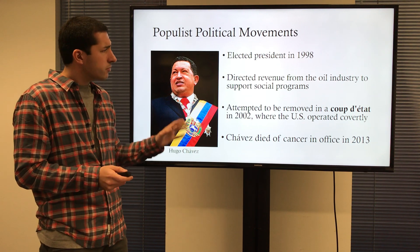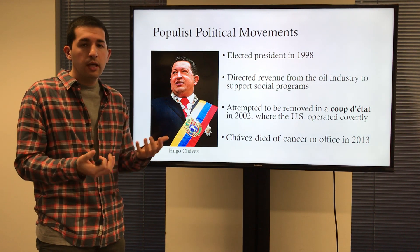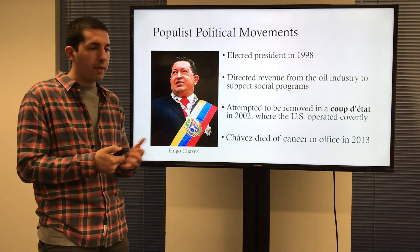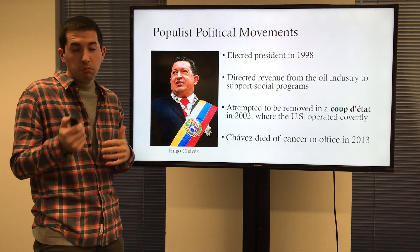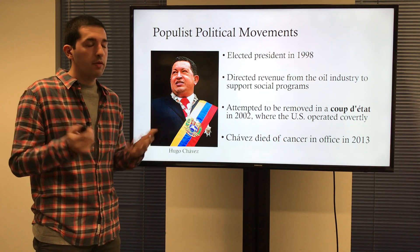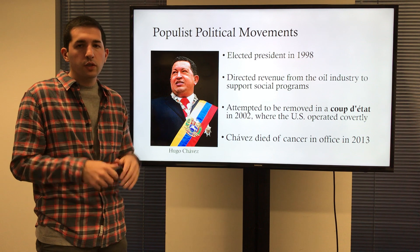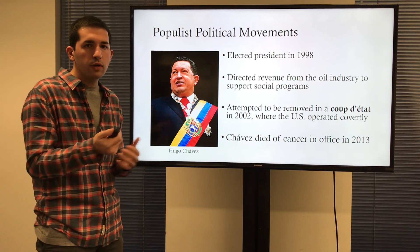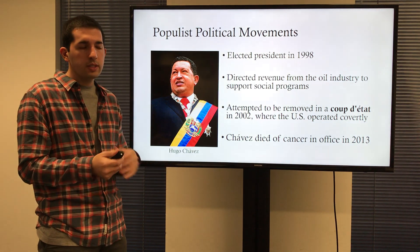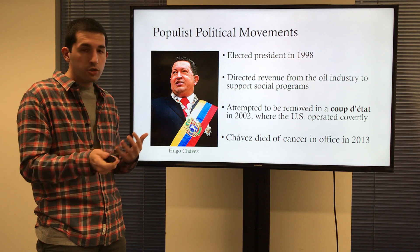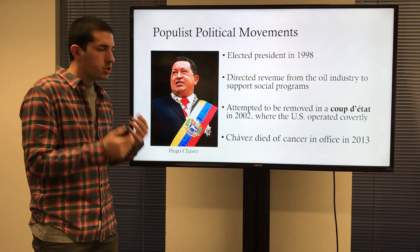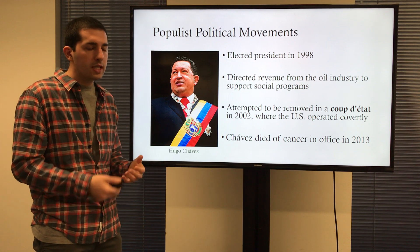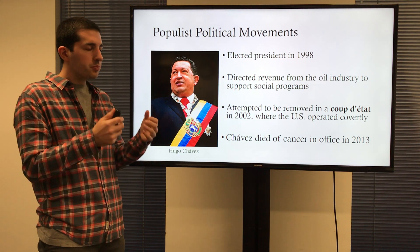The book gives the example of Hugo Chavez and populist movement in Middle and South America. He was elected president in 1998 and directed revenue from the nationalized oil industry in Venezuela toward social programs. He lost support from political and economic elites and had to rely on being a champion of the poor. He faced an attempted coup d'état in 2002 — a military or civilian attempt to take over the government — and the US was said to have operated covertly in that under the Bush administration, because Chavez was a socialist and left-leaning politician, which conflicted with US free market capitalist ideals.